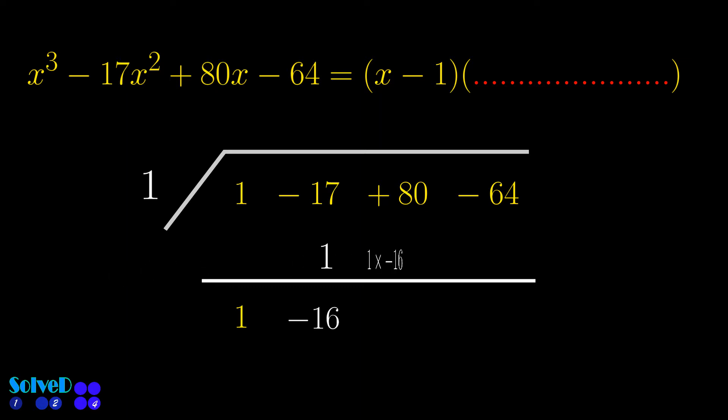Multiply this minus 16 with 1, then add. Multiply this 64 with 1 and write here. Then add. Now using these coefficients, write the x terms.